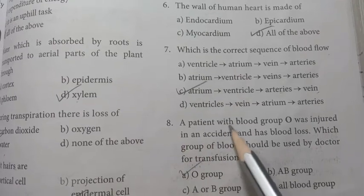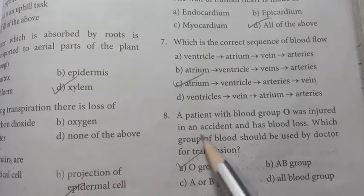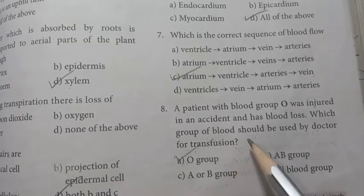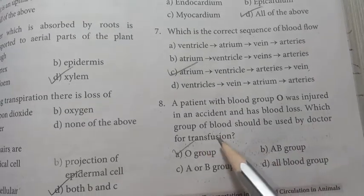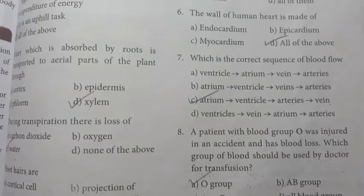Eight: a patient with blood group O was injured in an accident and has blood loss. Which group of blood should be used by doctor for transfusion? Answer is A option, O group.